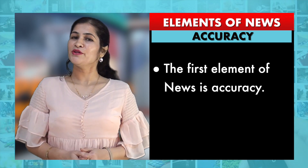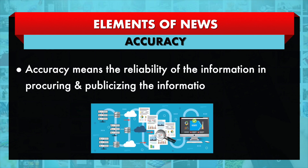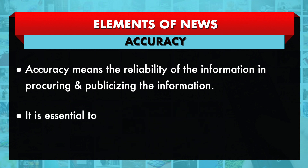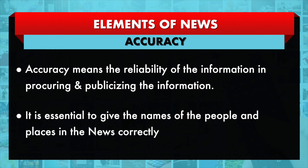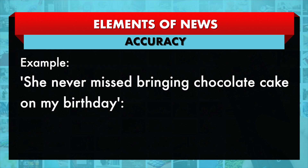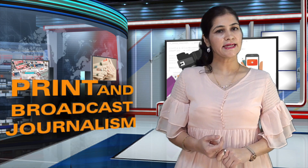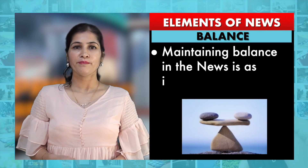The first element of news is accuracy. Accuracy means the reliability of the information. In procuring and publicizing information, it is essential to give the names of people and places correctly. While emphasizing facts and figures, correct numbers are the baseline for the reliability of the news. When mentioning the days, dates, and times of events or incidents, accuracy plays an important role.